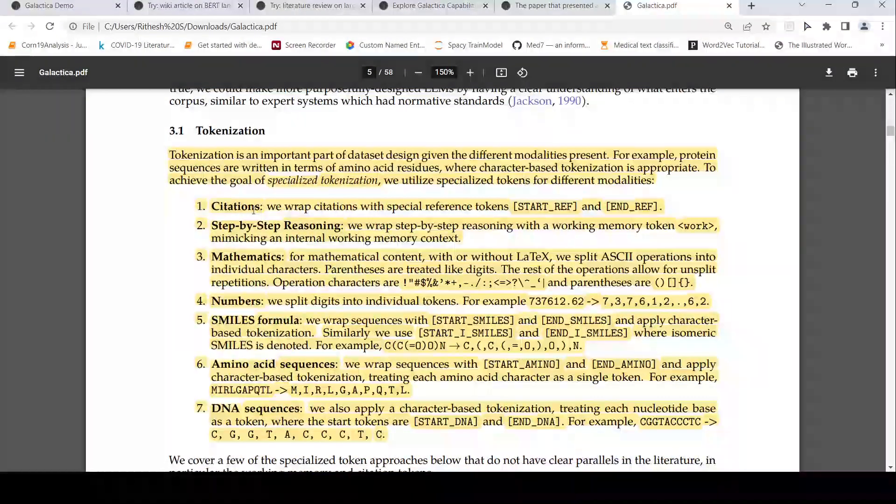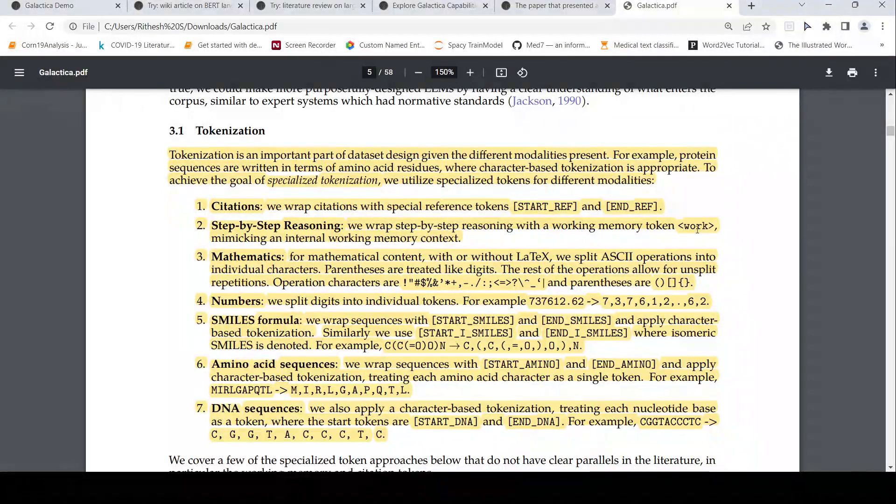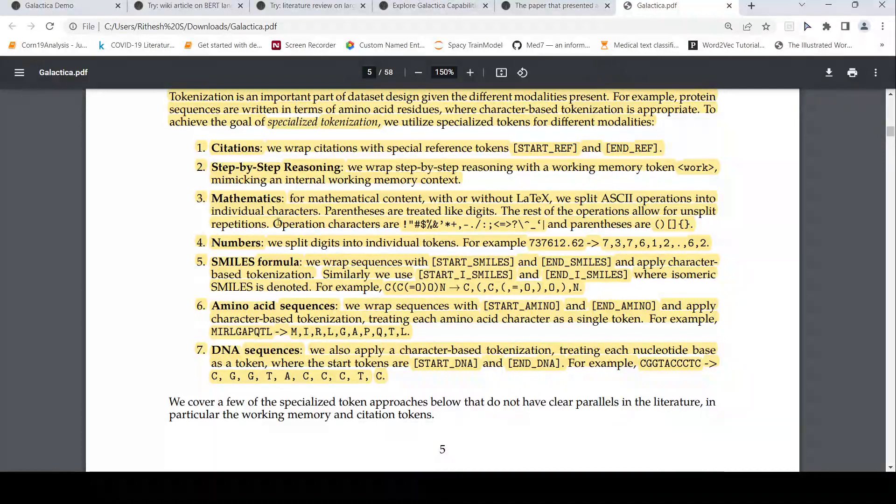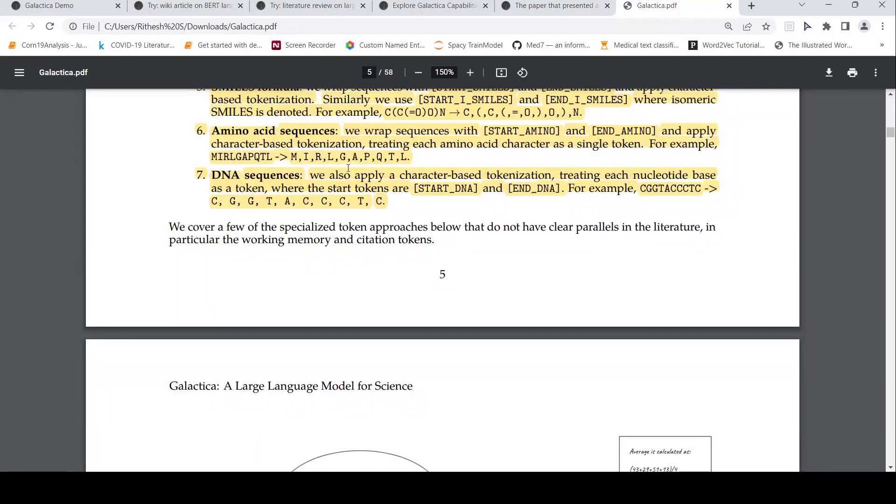So for tokenization, for citations they have a special reference token, start ref and end ref. For step by step reasoning, they wrap with a working memory token called work, which mimics an internal working memory context. For mathematics, they split ASCII operations into individual characters, parentheses are treated like digits, the rest of the operations follow allow for unsplit repetitions. For numbers, they split it into individual tokens. For SMILES formula, they wrap it with start smiles, end smiles. They can also have something called isometric smiles, where they have I over here. For amino acid sequences, they wrap with start amino, end amino and also apply some character based tokenization, treating each amino character as a single token. For DNA sequence, start DNA, end DNA. So this is the tokenization process.